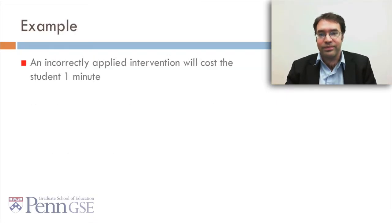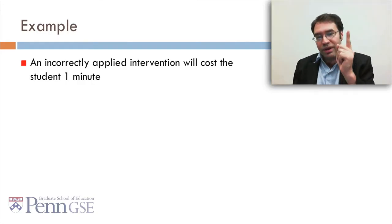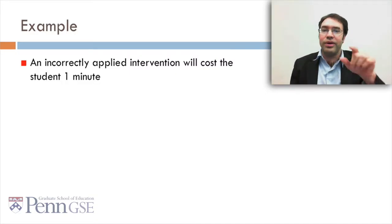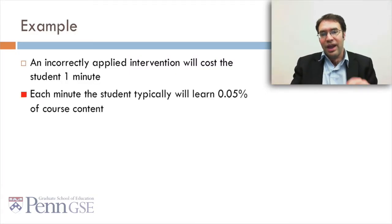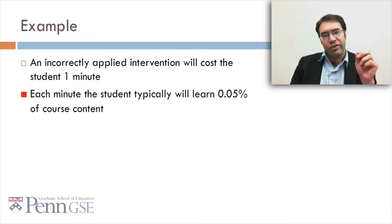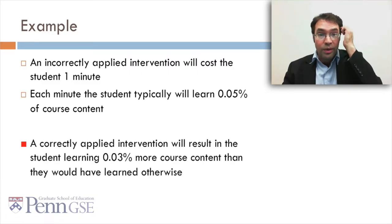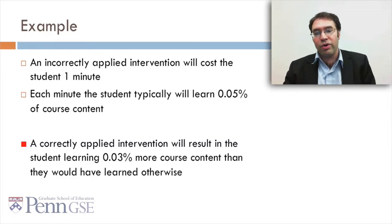Let's look at an example. Let's say that an incorrectly applied intervention will cost the student one minute of time — so there's no cost to learning, it doesn't drive the student away, but the student loses a minute of their time. Each minute the student is typically going to learn 0.05% of course content, so there's a real cost to losing that time. A correctly applied intervention will result in the student learning 0.03% more course content than they would have learned otherwise.